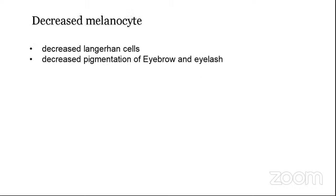The next change is the deepening of lines of expression, mainly seen in the lateral lid margin, also called crow's feet. It can be relieved cosmetically — Botox or certain cosmetic surgeries are done to relieve these lines of expression. There is also a decrease in melanocytes: fewer melanocyte cells in the eye leads to decreased pigmentation. Melanocyte cells give colour to skin, hair, and eyelashes. Decreased melanocytes and Langerhans cells cause eyebrows and eyelashes to undergo depigmentation — decrease in melanin pigment.